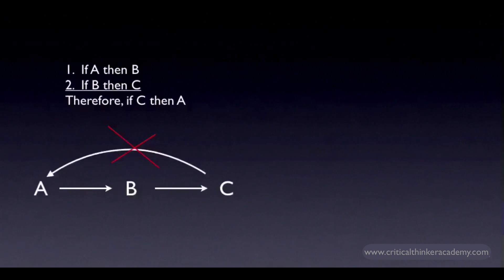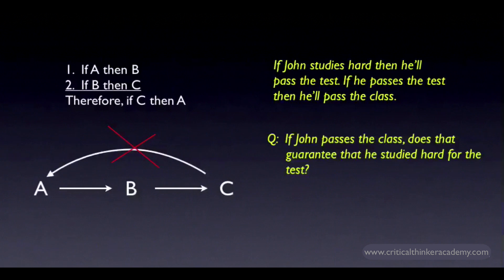So just to summarize, this is a no-no. Here's an example. Let's assume the following conditionals are true: if John studies hard then he'll pass the test; if he passes the test then he'll pass the class. Now assume that John does indeed pass the class. Does it follow with deductive certainty that John studied hard for that test? No, it doesn't. Maybe the teacher gave him a very easy test that day that John could pass without studying hard. Maybe he bribed the teacher. On the other hand, if we knew that he studied hard for the test, we could validly infer that he passed the class. That would be the valid form of reasoning in a chain.